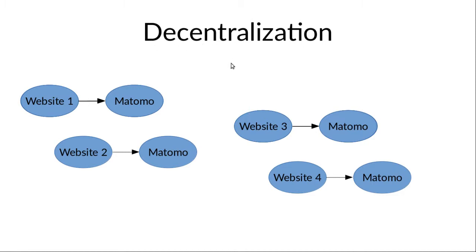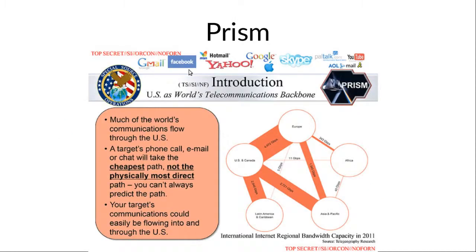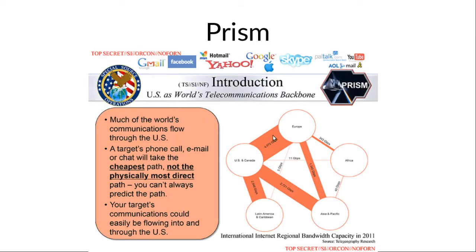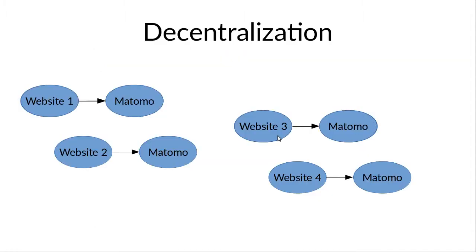Now let's look at a decentralized system, and I'm taking the example of Matomo. Imagine you have one company — website number one — using Matomo. The data only goes to the Matomo server of website number one, with no possibility to cross with another. The exception would be a cloud provider offering Matomo at massive scale, but most of the time companies install Matomo on-premise, on their own server, meaning different services cannot share data with each other.